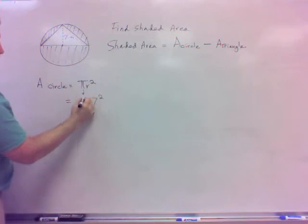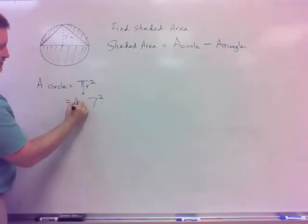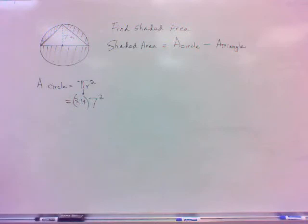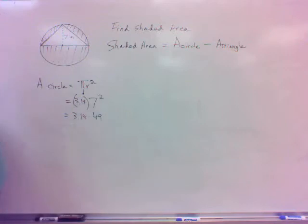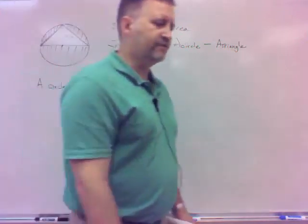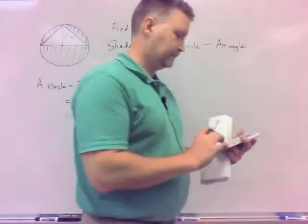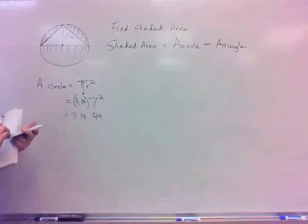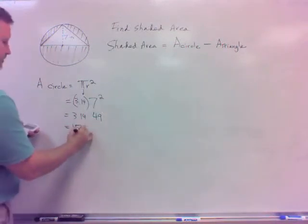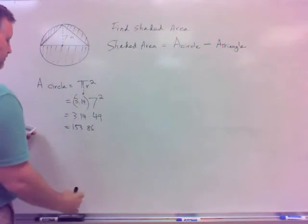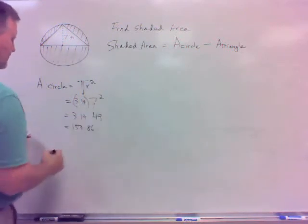Now again, pi, you can use your pi button, or you can use 3.14 approximation. So let's take 3.14 times 49. That will give me my area of 7 squared is 49. 3.14 times 49 is 153.86. That's the area of the circle.